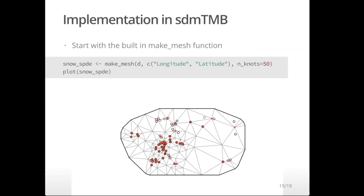To speed up estimation, some folks have developed an extension of INLA that works with automatic differentiation routines in Template Model Builder — TMB — which is another R package written in C++. There are a couple of different packages that integrate INLA with R. The first is VAST, developed by Jim Thorson, which is used for many fisheries applications and is a super powerful tool. The other is the sdmTMB package, which is the one we'll be talking about today.